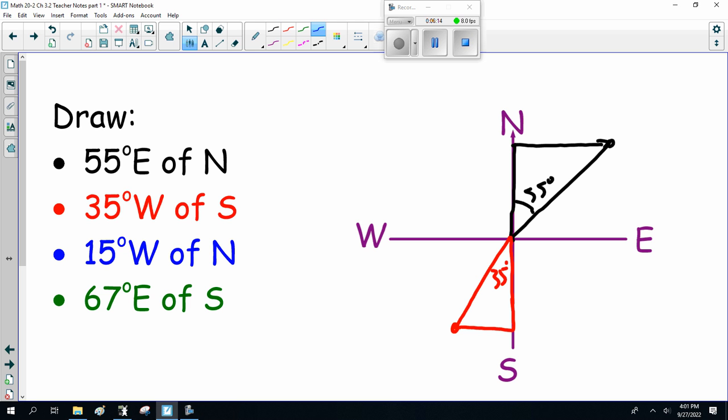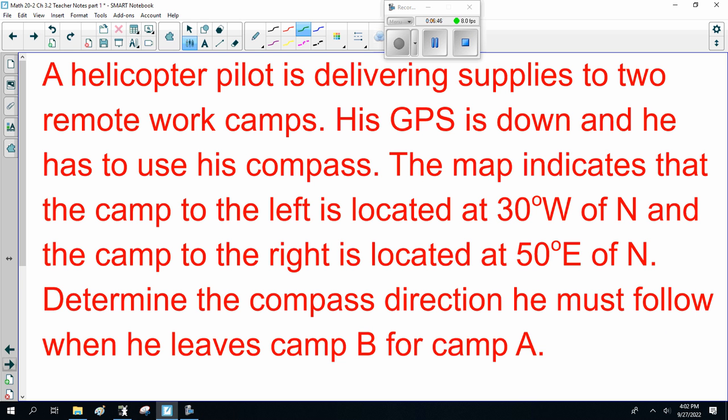Now, I'm going to pause the recording. I want you to do 15 degrees west of north, and 67 degrees east of south. We'll come back and compare answers. So, pause the recording, do them. Welcome back. So, 15 degrees west of north would be heading this way. You go north, then you swing west, to make an angle of 15 degrees. 67 degrees east of south, you go south, then you swing east, go that way, make an angle of 67 degrees. All right. That's what you need to know.